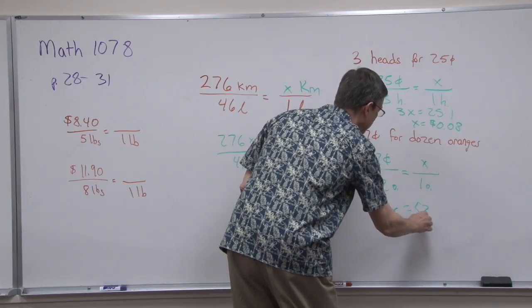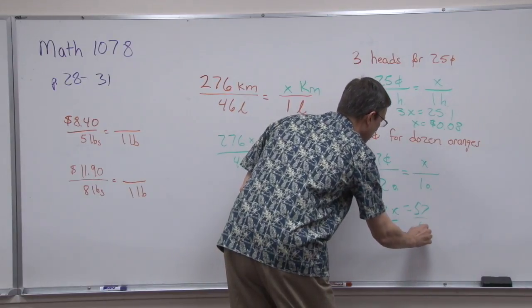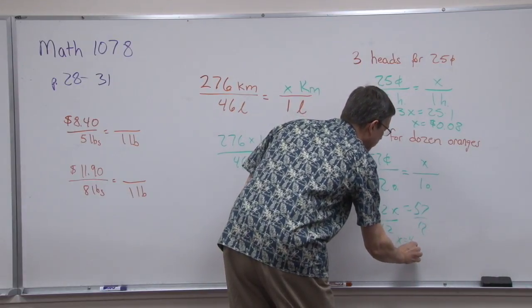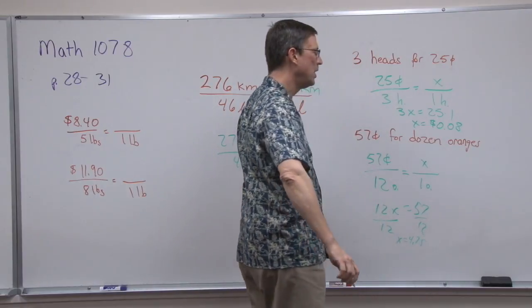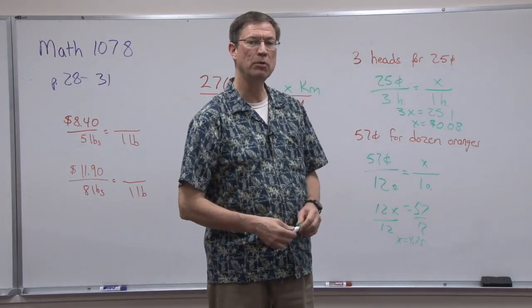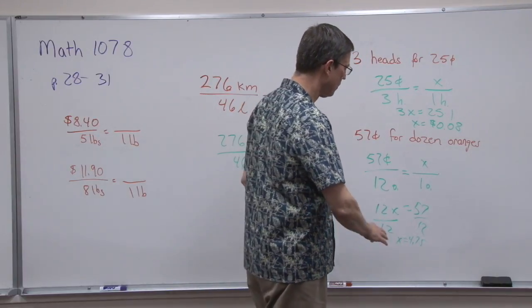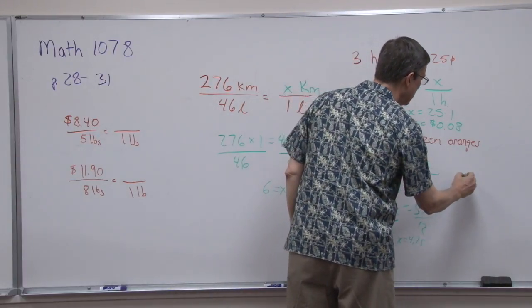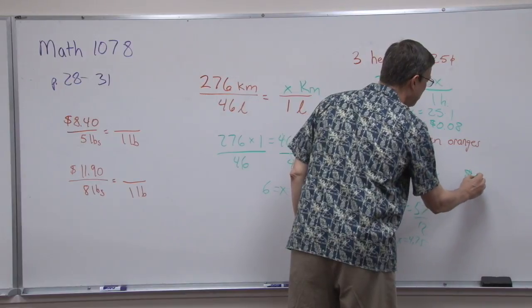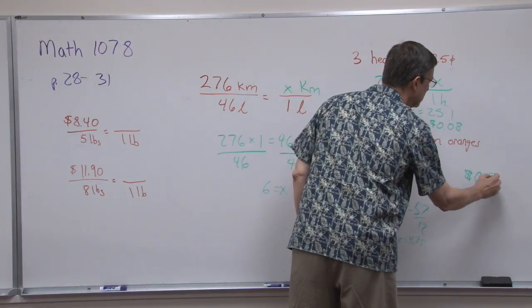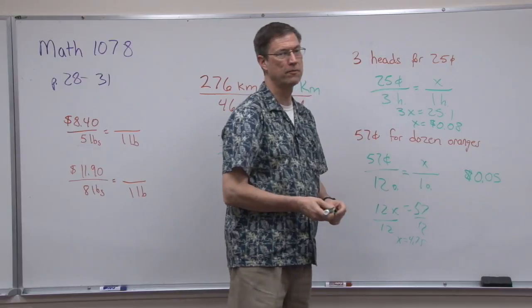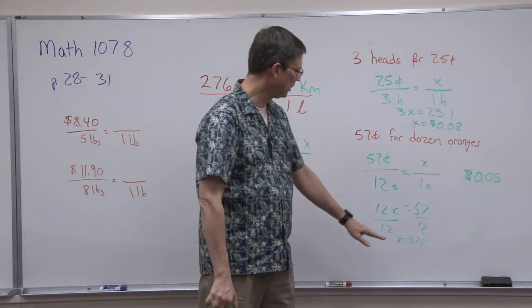I think we need to round that one up, don't you, because it's more than 4.5 cents. So 4.75 cents, and we'll probably write the answer like this: 0.05, even though when we use the calculator it came up to 4.75.